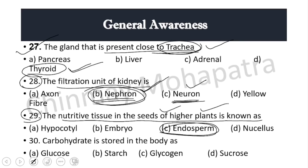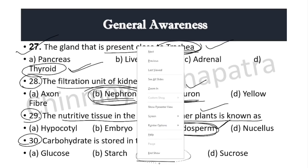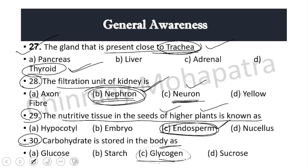In higher plants, the food is stored as endosperm. Carbohydrates are stored in the body as glycogen — right answer is glycogen, stored as glycogen. Okay, let's move on.